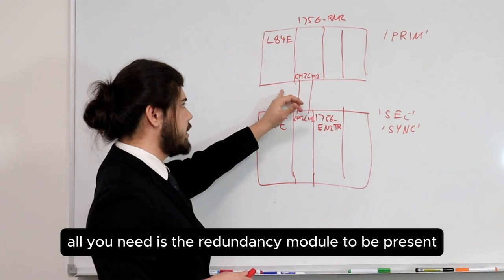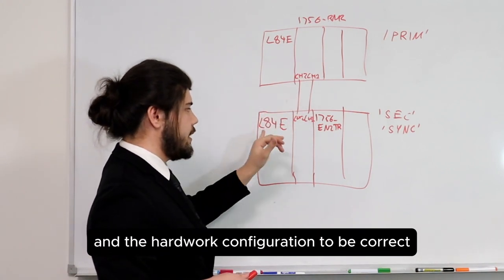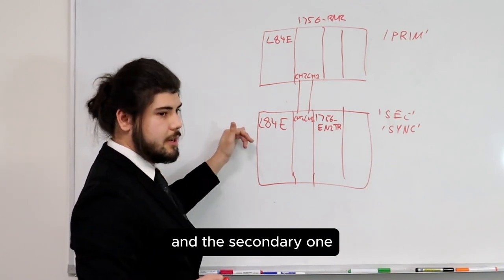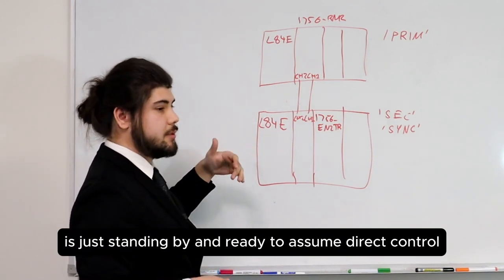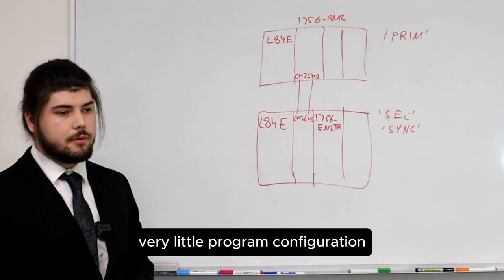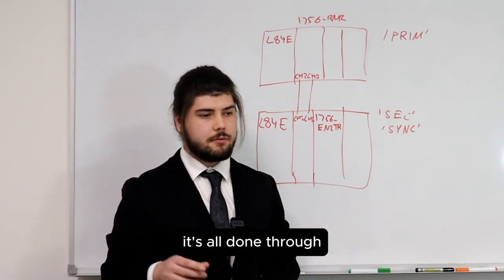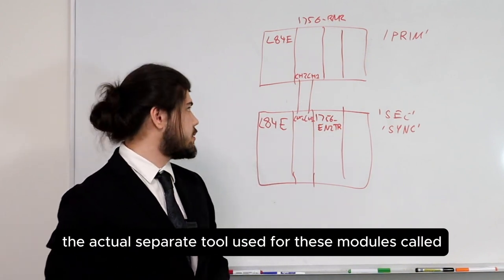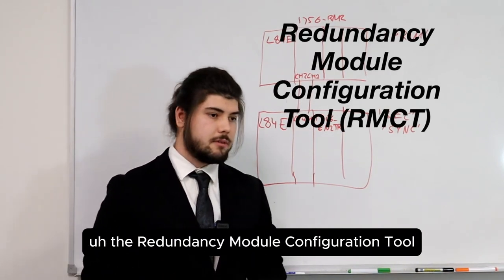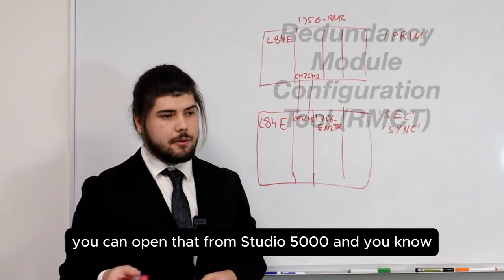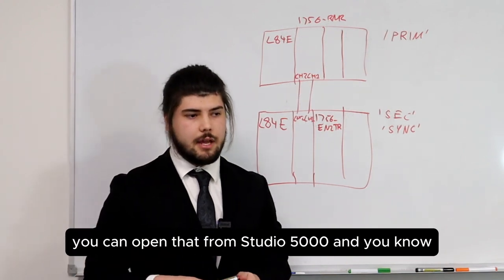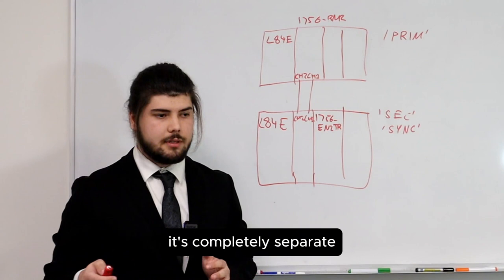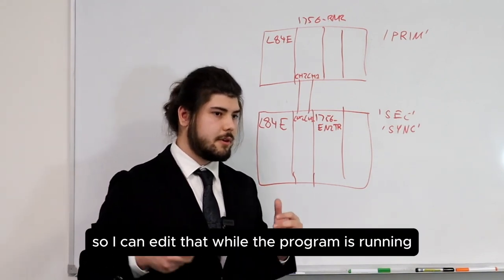All you need is the redundancy module present and the hardware configuration correct. There is no difference in the program which runs on the primary and the secondary — one's just standing by and ready to assume direct control. Very little program configuration is required. It's all done through the separate tool used for these modules called the Redundancy Module Configuration Tool, or RMCT. You can open that from Studio 5000, but it's not part of the program — it's completely separate. I can edit it while the program is running.